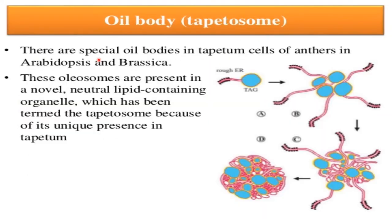Tapetosomes are special oil bodies in the tapetum cells of the anther in Arabidopsis and Brassica. These oleosomes are present in a novel neutral lipid-containing organelle termed the 'tapetosome' because of its unique presence in the tapetum.